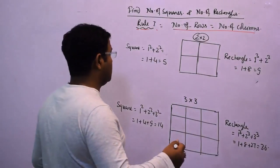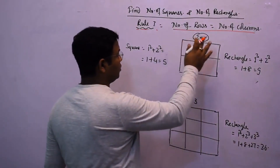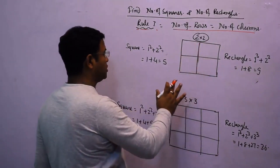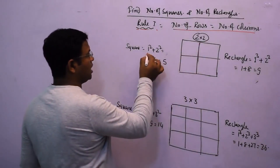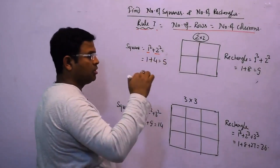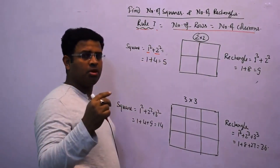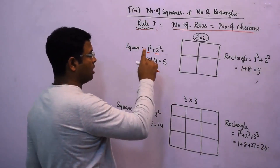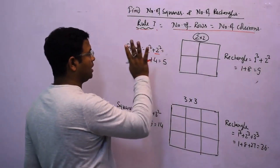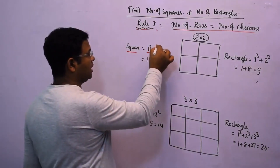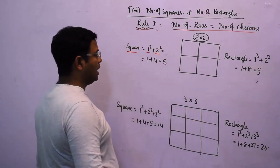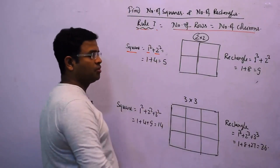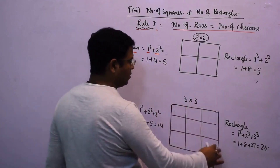To find the number of squares with two rows and two columns, I write 1² + 2², because the maximum number of rows and columns is two, starting from one. So 1² = 1 and 2² = 4, giving a total of 5 squares.